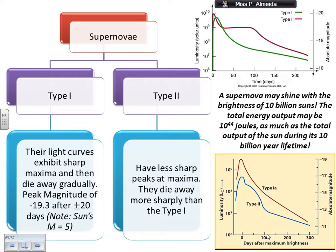Type 1 is when I have something like a white dwarf — which is, for example, what our Sun will become after it dies. That white dwarf has a companion, so it's in a binary system, and because it's so dense, it's going to accrete mass from the companion star. Once it reaches 1.44 solar masses, it gets to a critical state — the critical mass — it becomes unstable and it explodes. That's a type 1 supernova.